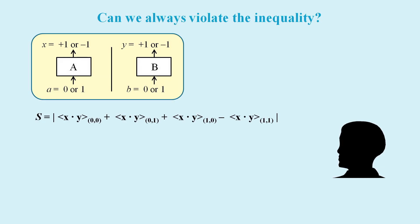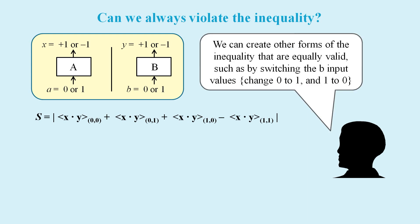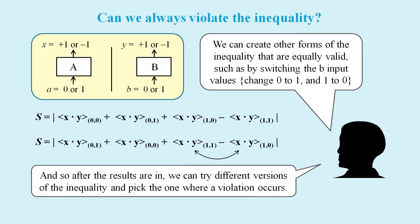If we wanted to be devious, is there a way we could repeat our coin flip experiment and appear to violate the inequality every time? Well, we could argue that other forms of the inequality are equally valid. By switching the B input values around, we effectively make the last two terms swap places. Then after we've got the results, we could simply choose the version of the inequality where a violation occurs.